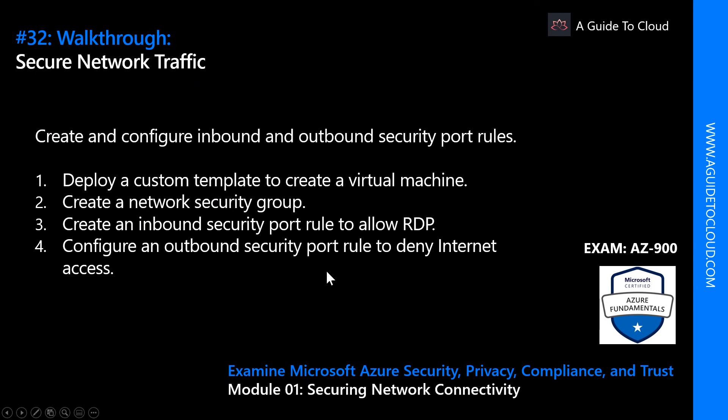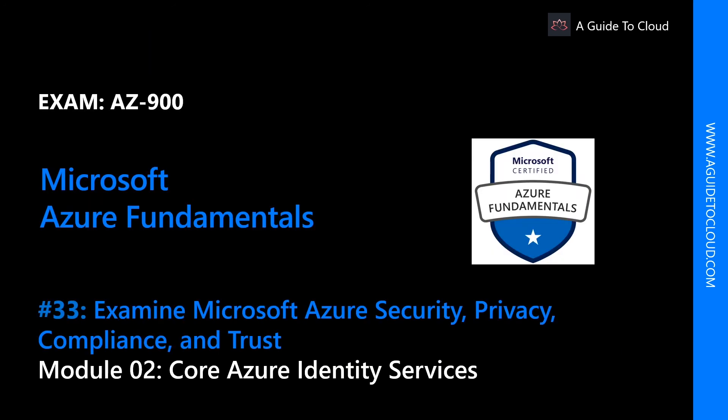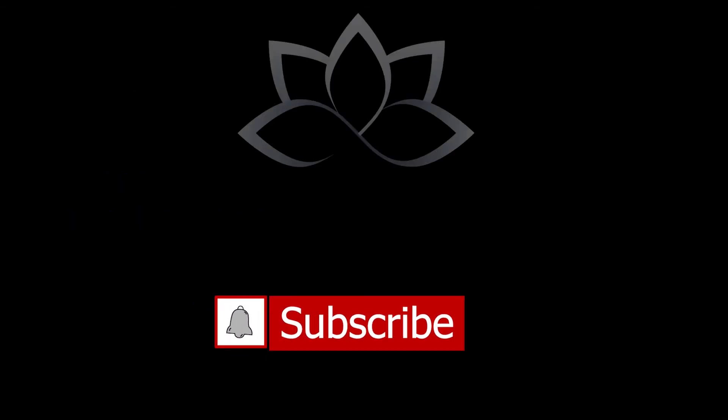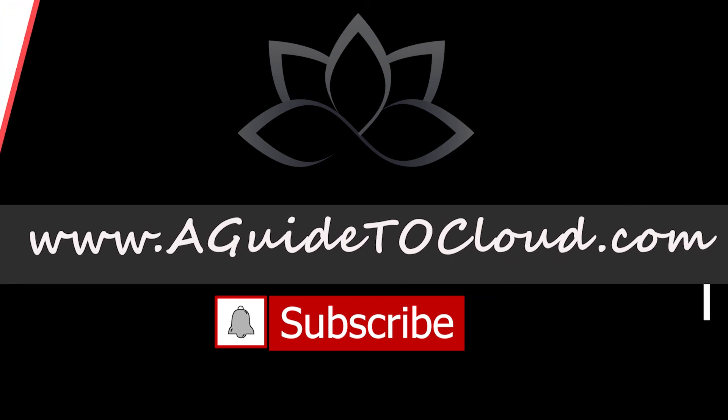In this walkthrough we learned about creating a simple virtual machine, creating a network security group, testing the inbound security port which was initially not allowed, then allowing the RDP port, and then configuring the outbound security rule which denied internet access to the VM. In the next video we're going to talk about the core Azure identity services. I'll see you in the next video — take care.